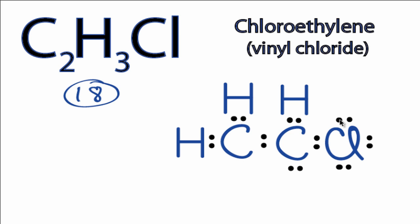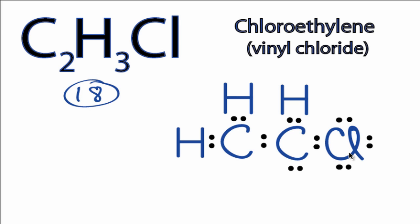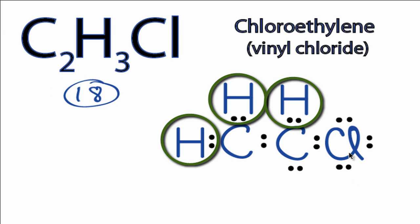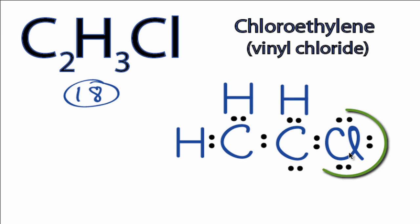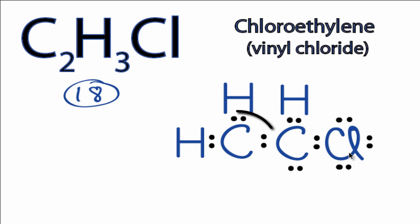At this point, we've used all 18 valence electrons. The hydrogens have two valence electrons, so their outer shells are full. The chlorine has eight, and the one carbon right here has eight, but the terminal carbon only has six valence electrons. So we're going to need to share valence electrons in order to give it an octet.